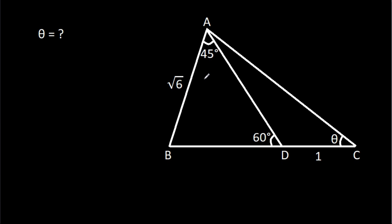In this video, we have been given that AB is √6, CD is 1, angle BAD is 45 degrees, angle ADB is 60 degrees, and angle ACD is theta. We have to find theta.